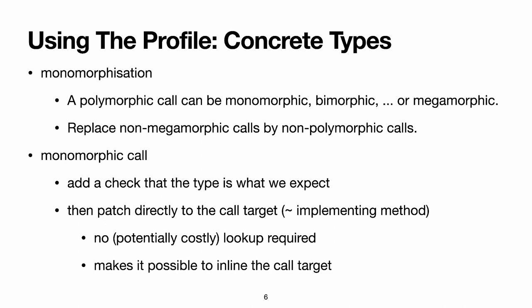If there are two such types, the call is bimorphic. You can go ahead and do trimorphic, etc., but at some point you have to draw a limit, and you see that all calls with more concrete types than the limit are megamorphic. The goal of monomorphization is to replace those polymorphic calls that are not megamorphic by one or more non-polymorphic calls, so those are calls where we know exactly which method of which class will be called.